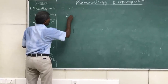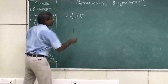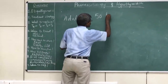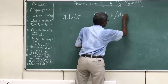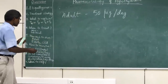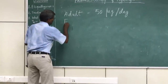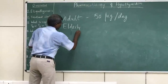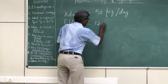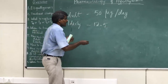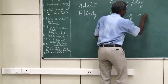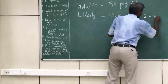The usual adult dose for initiating treatment is 50 micrograms per day, given as a single daily dose. In elderly people, the starting dose is usually lower — either 12.5 or 25 micrograms per day — because they have a higher chance of experiencing adverse effects with these drugs.